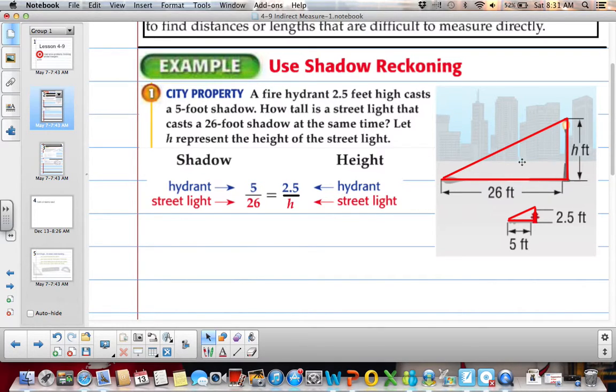And if you think back to when we did similar polygons and we had two similar triangles, we always looked and we saw we would match up our 2½ with our H, because they're the corresponding sides. And we would match up our 5 and 26, because they're corresponding sides. Notice that we have 5 and 2.5 on the top, because they're both the hydrant, or the smaller triangle. And then we have 26 and H on the bottom, because they're both the street light.